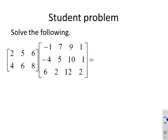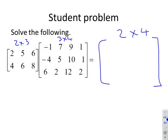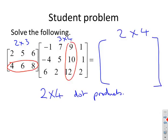This example is more complicated: we have 2×3 and 3×4, so the result is going to be 2×4. There are 2×4 = 8 dot products to compute, and each one is tedious. For example, the second row times the third column gives 4×9 + 6×10 + 8×12. Matrix multiplication is not really a pen-and-paper exercise — we need to know how it's defined and how to do it, but in practice you wouldn't usually use pen and paper unless you had no choice.